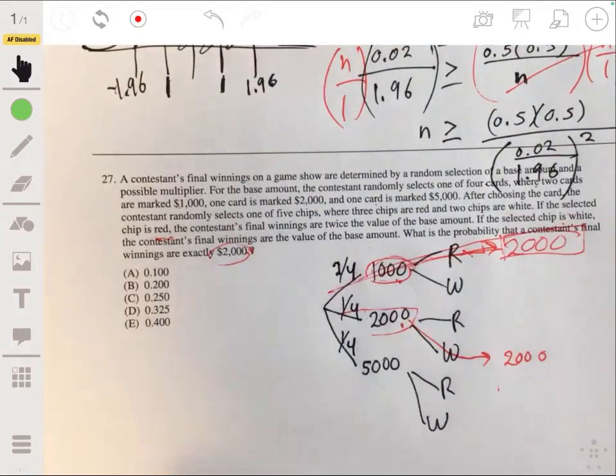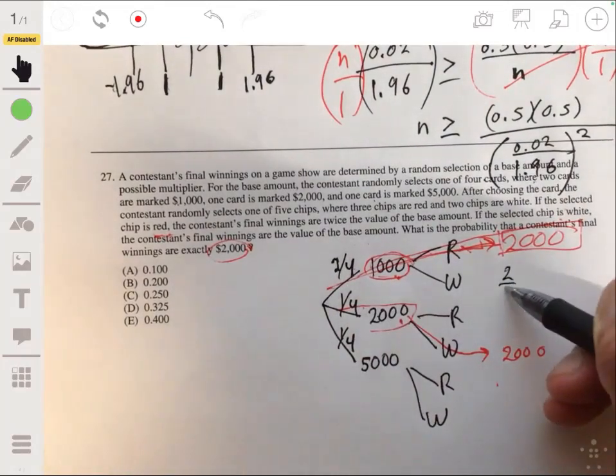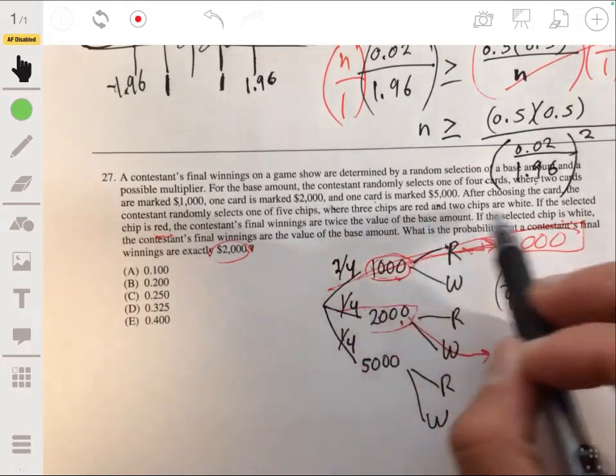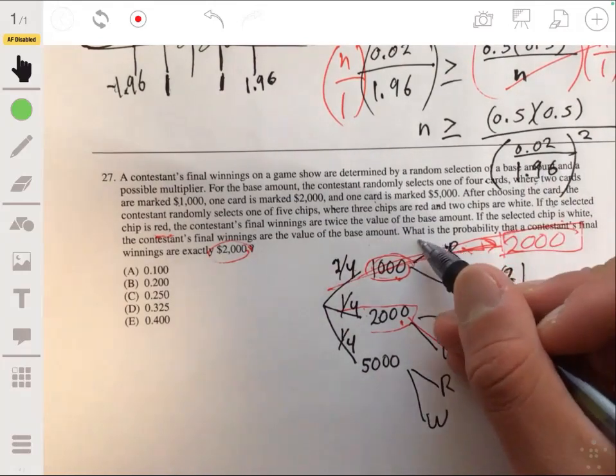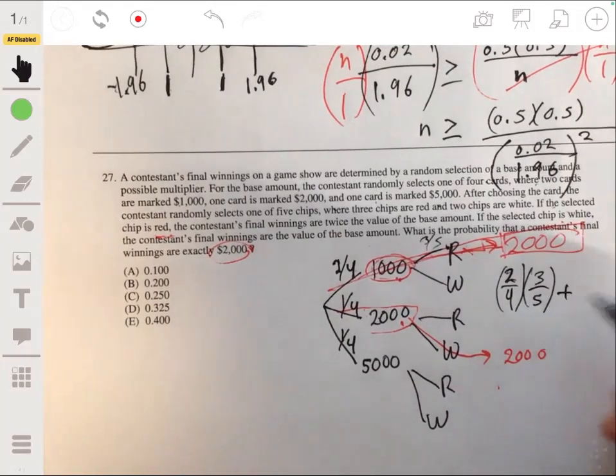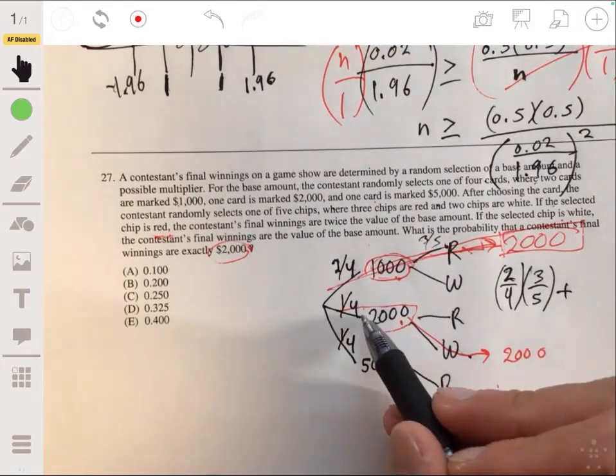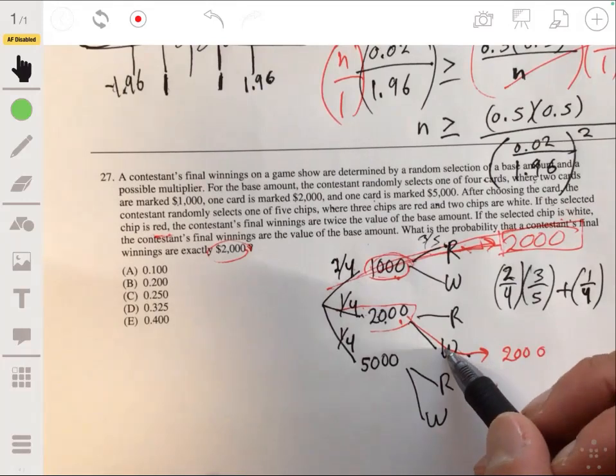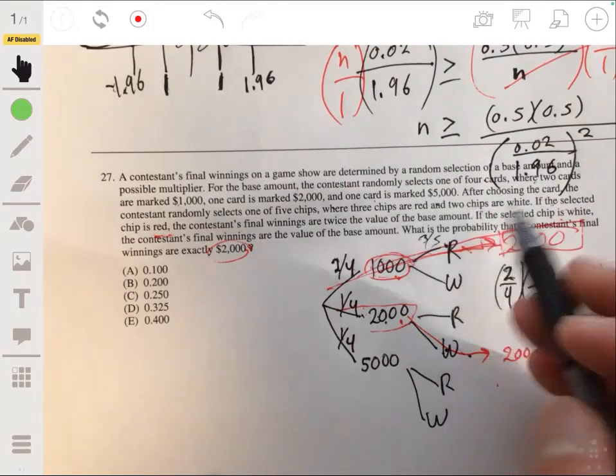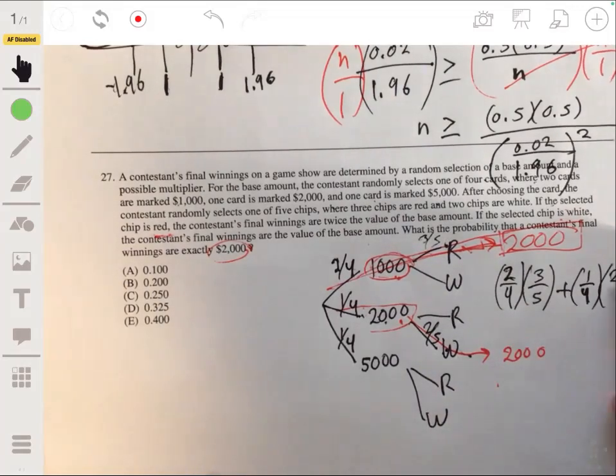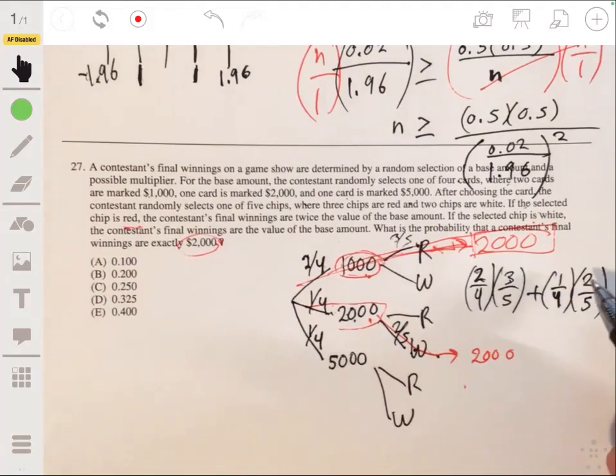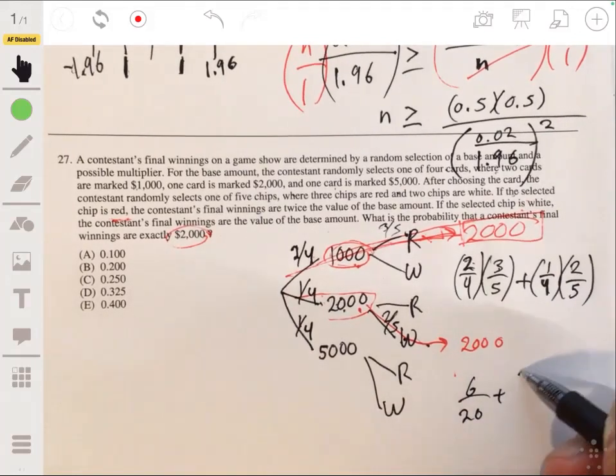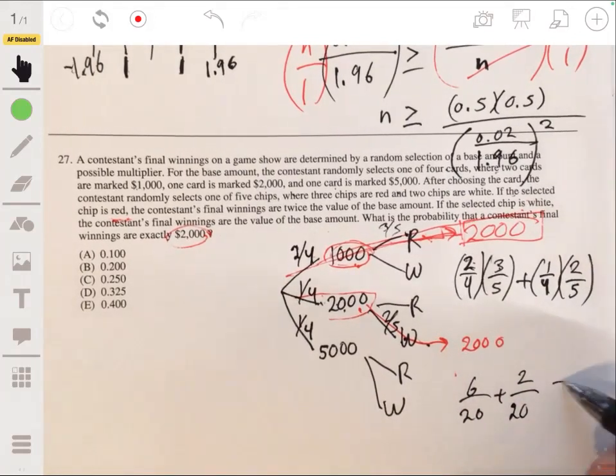So the probability of this occurring would be the probability of this plus the probability of this. The probability of this up there would be 2 fourths times the probability of red, which is 3, 3 fifths, 3 out of 5. So 2 fourths times 3 fifths, plus this probability of selecting a $2000 card, which is 1 fourth times the probability of white, a white chip, which will be 2 out of 5. So this times 2 fifths. So you just add this basic fraction sum. So you get 6 20ths plus 2 20ths, which is 8 20ths or 0.4.